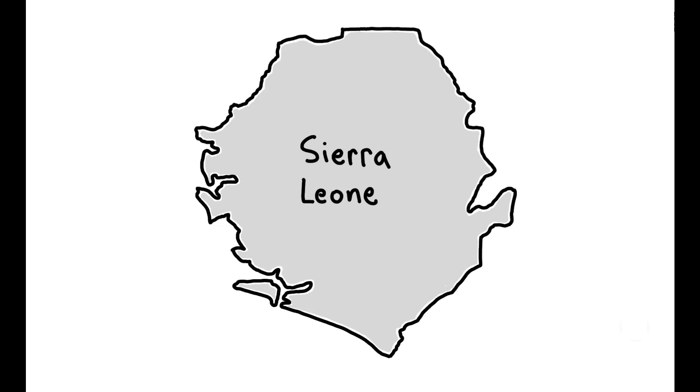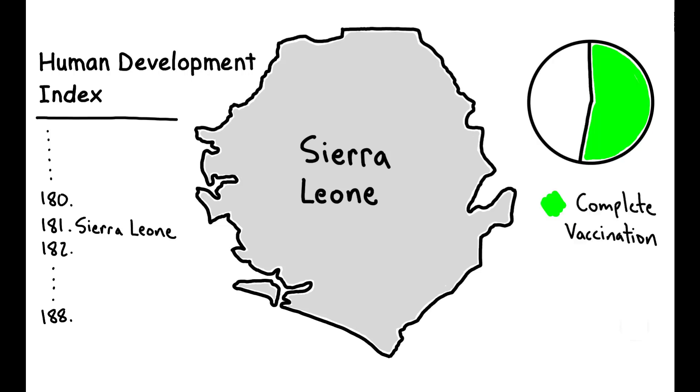This is one of the poorest countries in the world, ranking 181 out of 188 in the Human Development Index, and has one of the highest infant and under-five mortality rates. Though vaccines are free of charge and readily available in clinics throughout the country, only 58% of children complete their vaccinations.